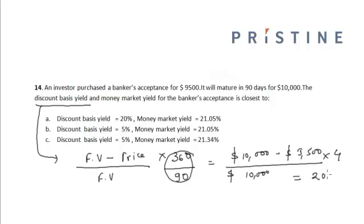However, in case of money market yield, it is given by face value minus price divided by price.